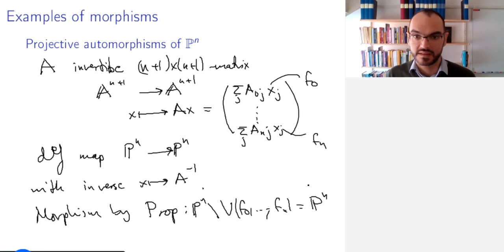this is just ℙⁿ. These cannot all vanish simultaneously, because that would mean that the matrix A, its columns can combine linearly to 0 non-trivially. And that's not possible because A is invertible. So we get, we are in the situation of the previous morphism, and we do indeed get a morphism.